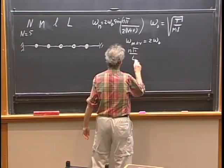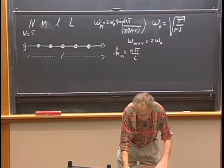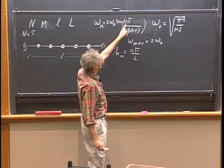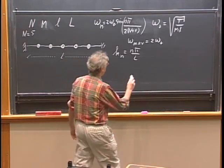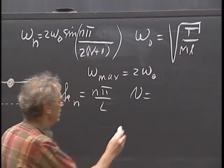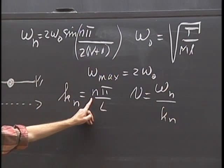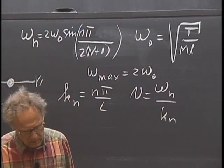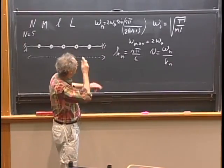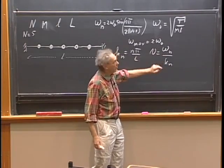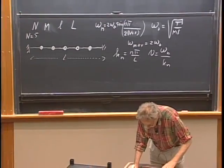The allowed k_n values are n pi divided by L if the length is L. Now omega_n does not increase linearly with little n because it increases with the sine of n. The speed of propagation V is the ratio omega divided by k, that is omega_n divided by k_n. Since k_n goes up linearly with n but omega_n does not, it is clear that the speed of propagation is lower for higher frequencies. That is an example of dispersion.